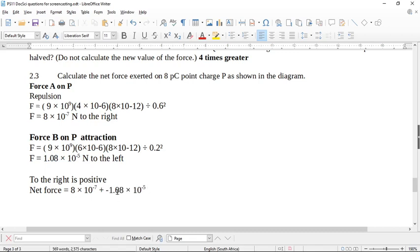And now we need to work this out in our calculator, because my brain is not up to this. I end up with negative 1 times 10 to the power of negative 5.